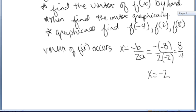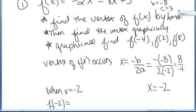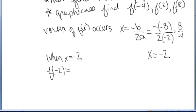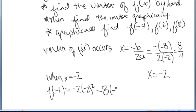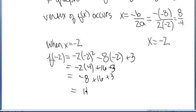Now the vertex is a point, not just an x value. So we need to find the y value when x equals negative 2. I go to my function and I plug in an x value of negative 2 and evaluate. The function is negative 2x squared minus 8x plus 3. So it's negative 2 times negative 2 squared minus 8 times negative 2 plus 3. So the vertex is the point x is negative 2, y is 11.